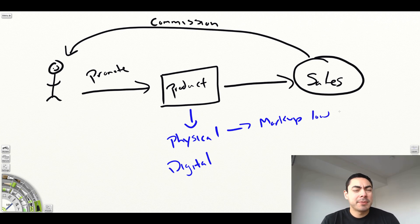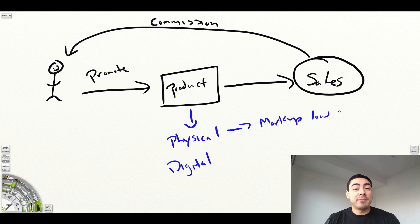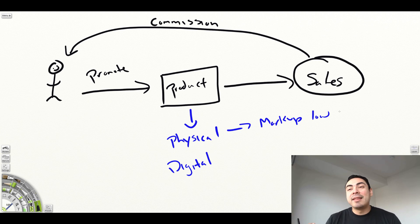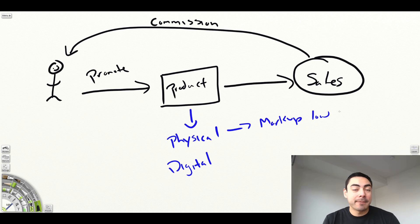If you are the one going out to get products manufactured — like outsourcing to China, warehousing them yourself in your garage, and shipping them out — you can do things that way, but it takes a lot more work and upfront investment. You don't want to end up with a thousand phone cases that don't sell on Amazon. Generally, the markup on physical products is going to be lower.